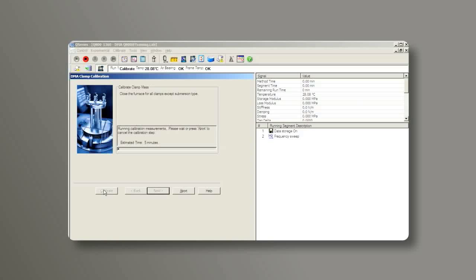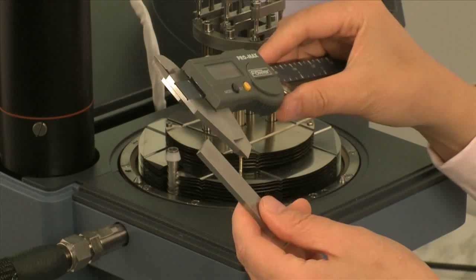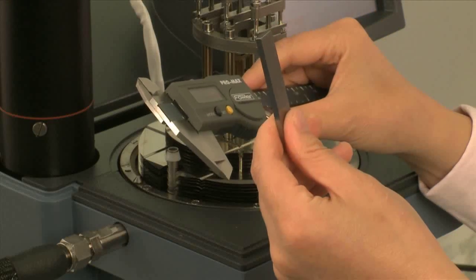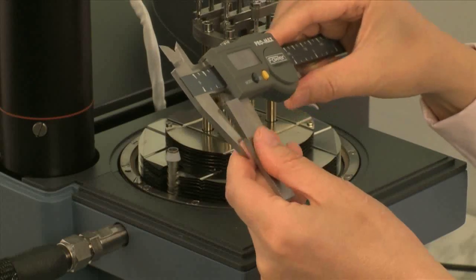This first calibration step is to calibrate the mass of the movable clamp. For clamp compliance calibration, take the steel bar from the clamp kit. Use a caliper to measure its width and thickness.